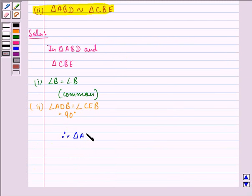Therefore, triangle ABD is similar to triangle CBE by angle angle criterion.